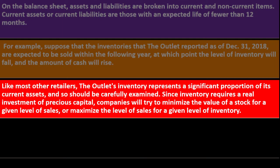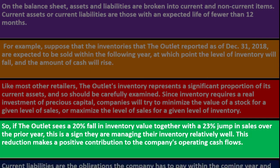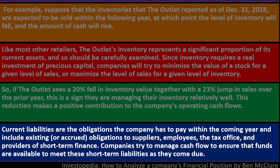If The Outlet sees a 20% fall in inventory value together with a 23% jump in sales over the prior year, this is a sign they are managing their inventory relatively well. This reduction makes a positive contribution to the company's operating cash flow.